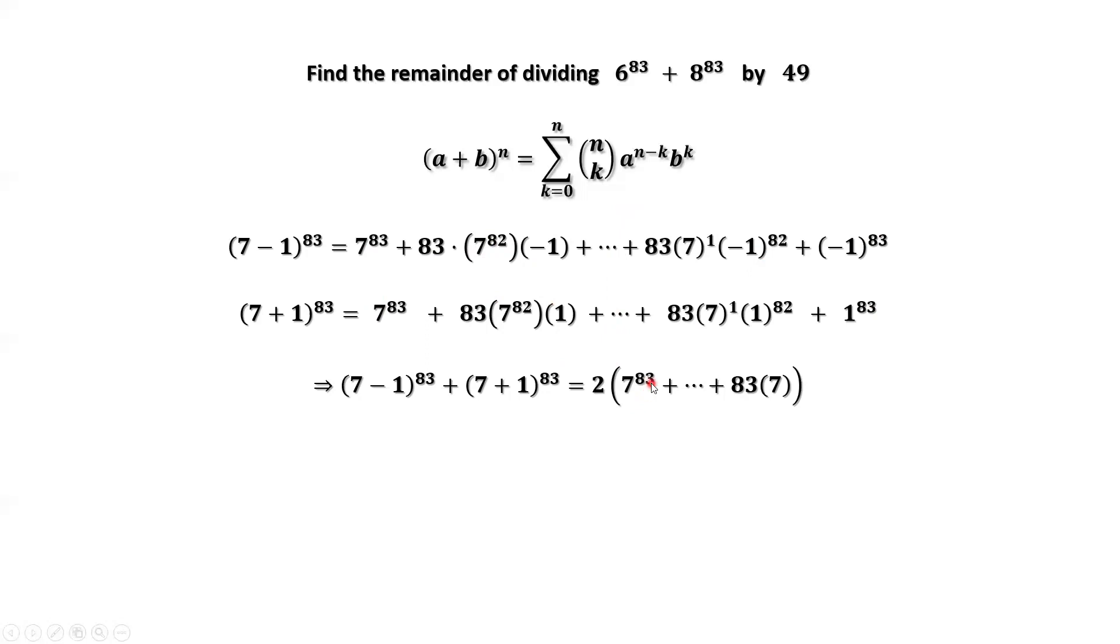Now, check this carefully. This term is positive. This term is positive. What is the previous term? I mean, the term containing 7 to the powers. Here is the 7 to the power of 1. The previous one is 7 to the power of 2. Then, 7 to the power of 3. 7 to the power of 2 means 49.